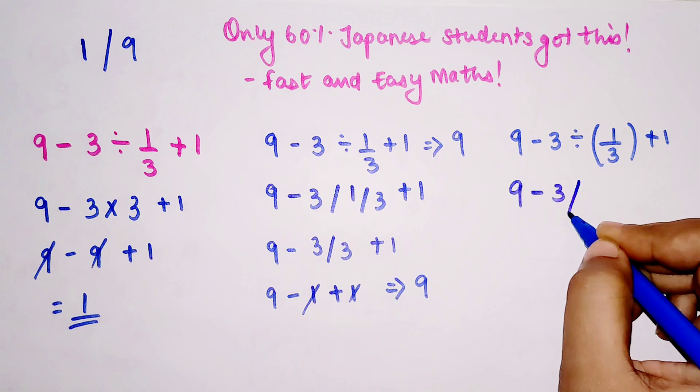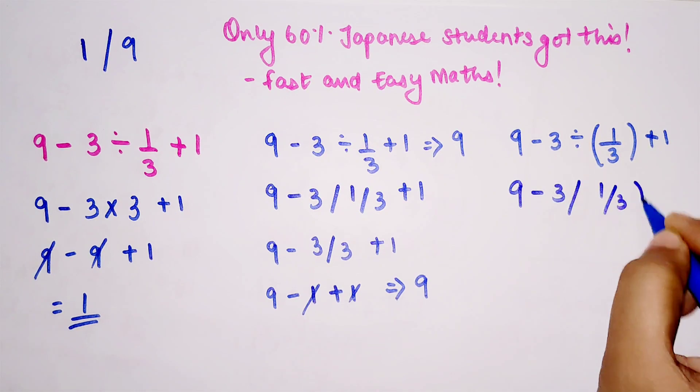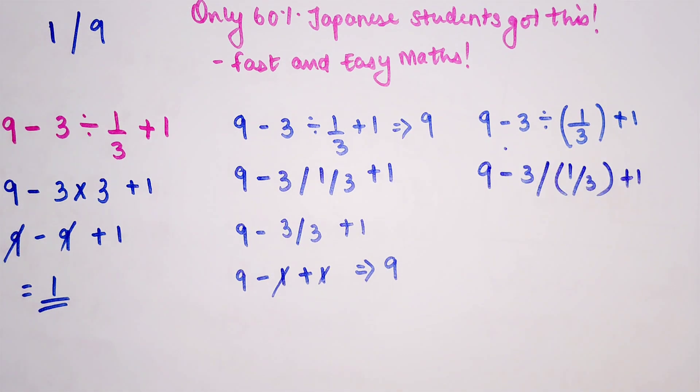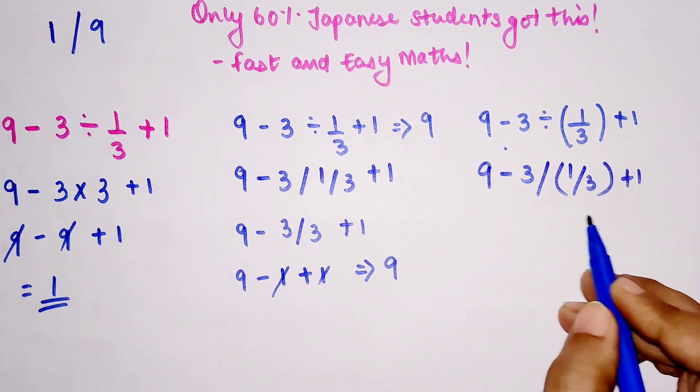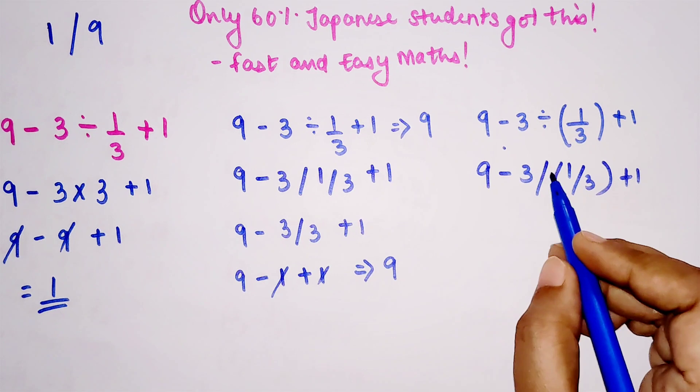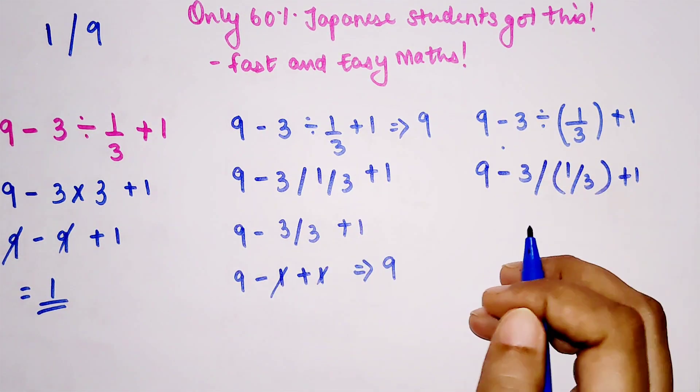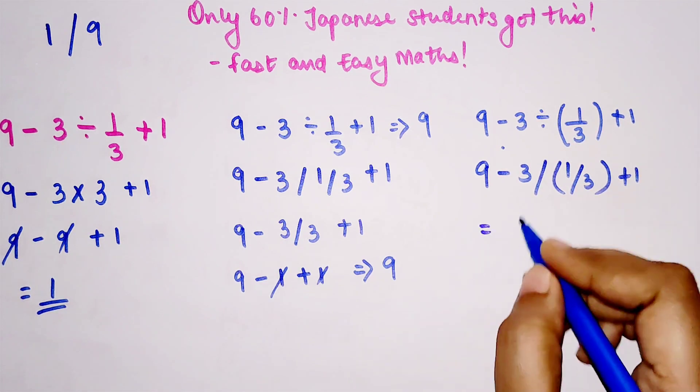Instead, you should do 9 minus 3 divide by 1 divide by 3, like this, plus 1. If you input it this way, Google understands that this is the first thing it has to do, and then the rest is followed. From this, your answer now changes to 1, and that is the correct answer to this particular equation.